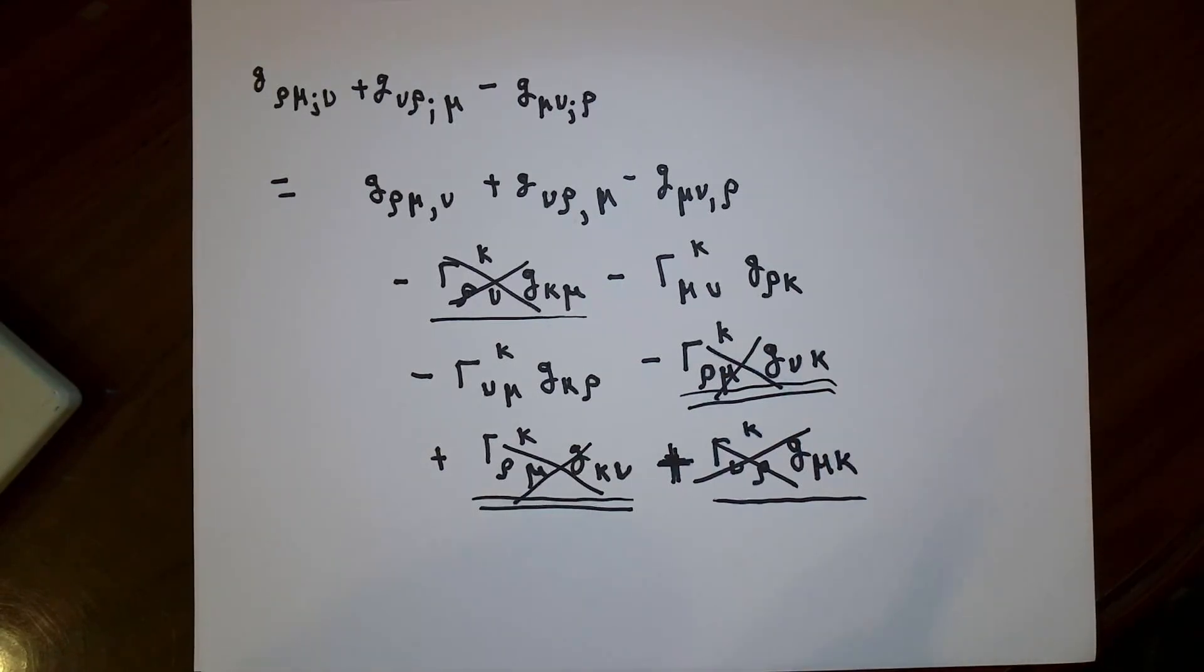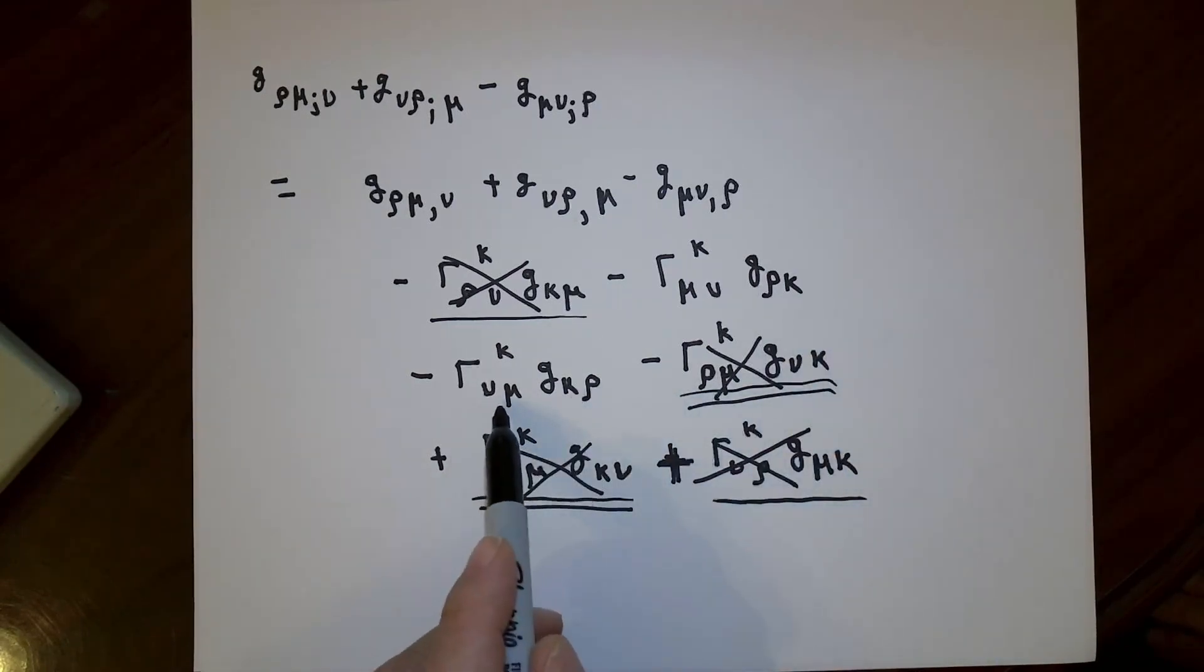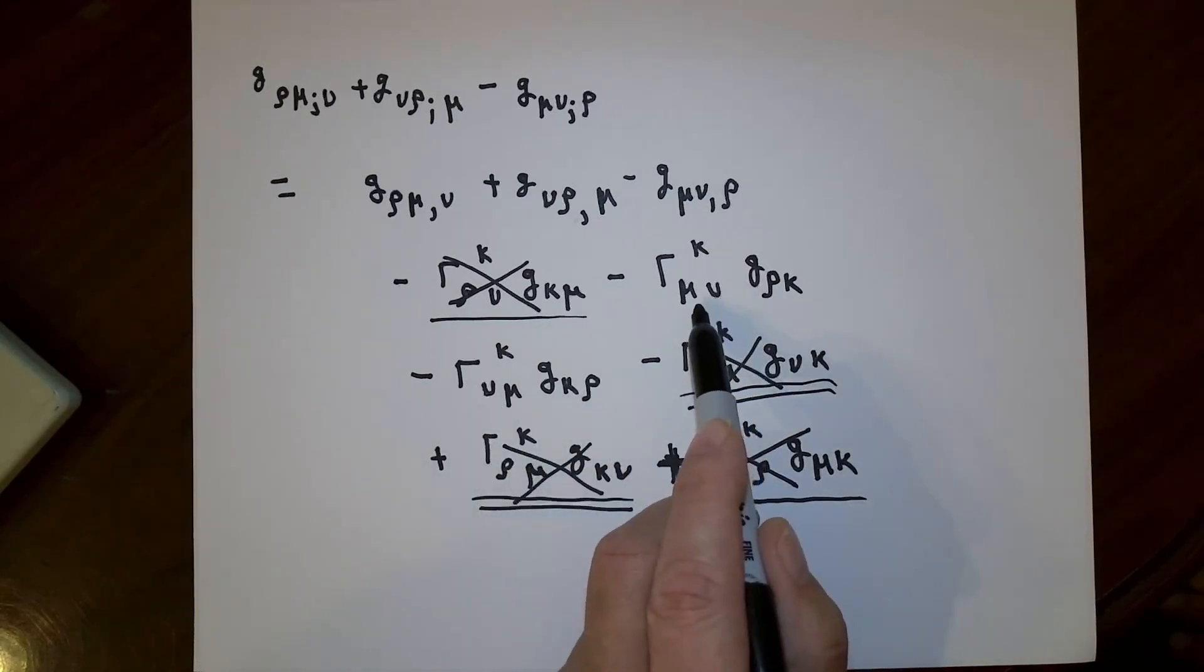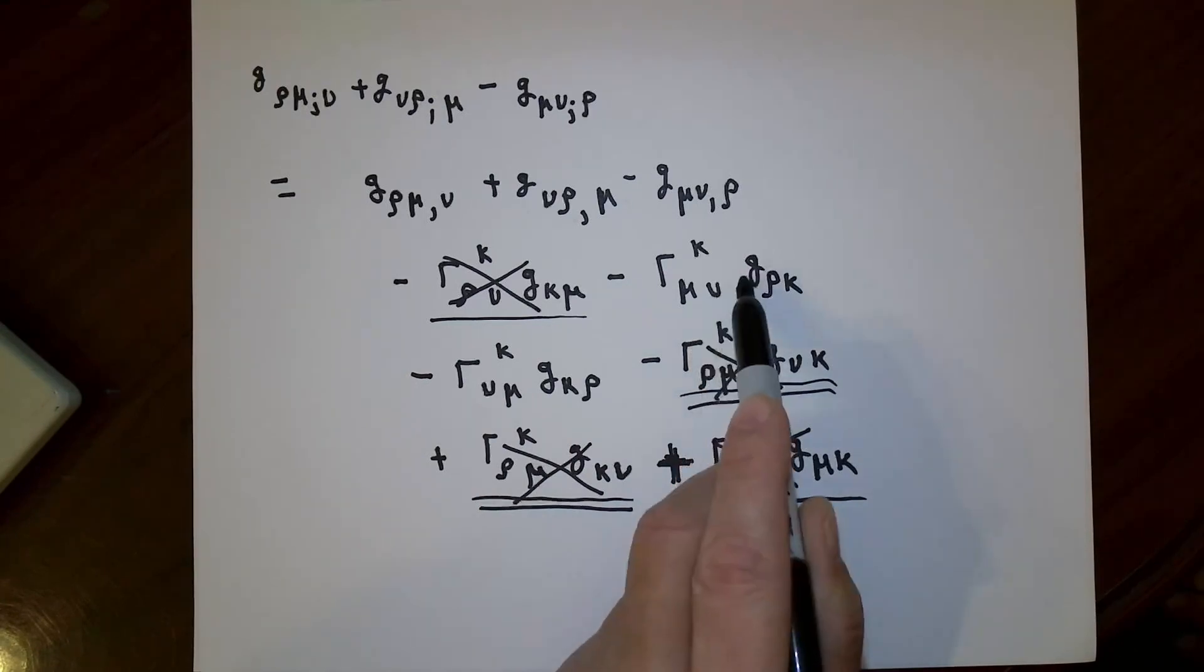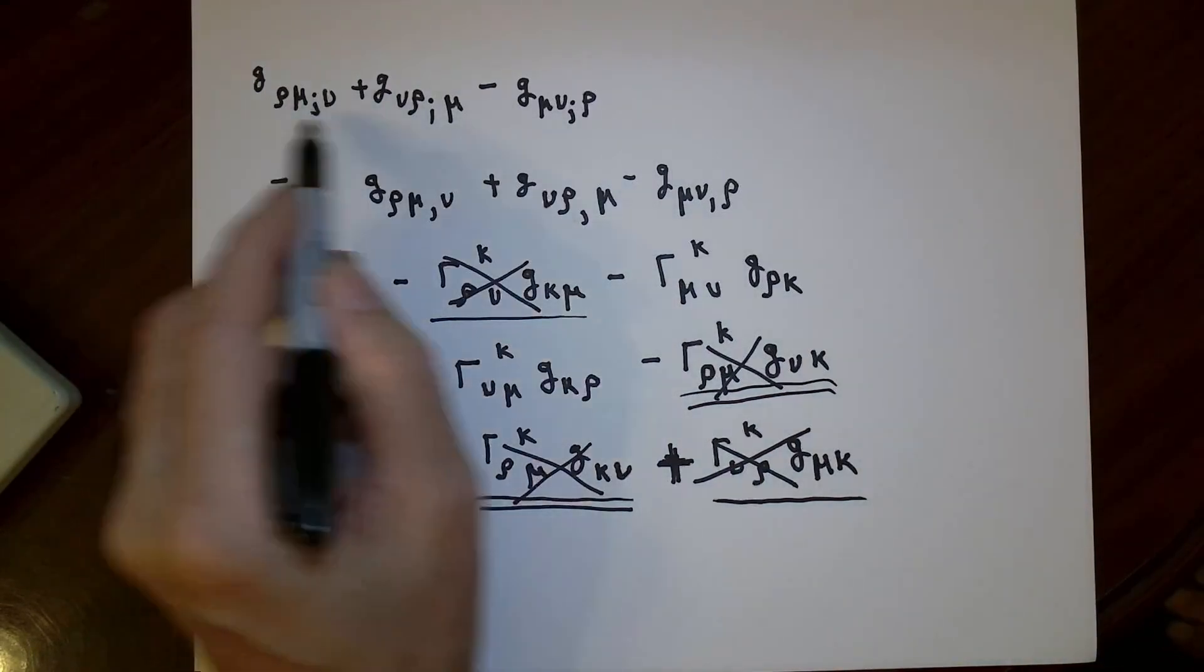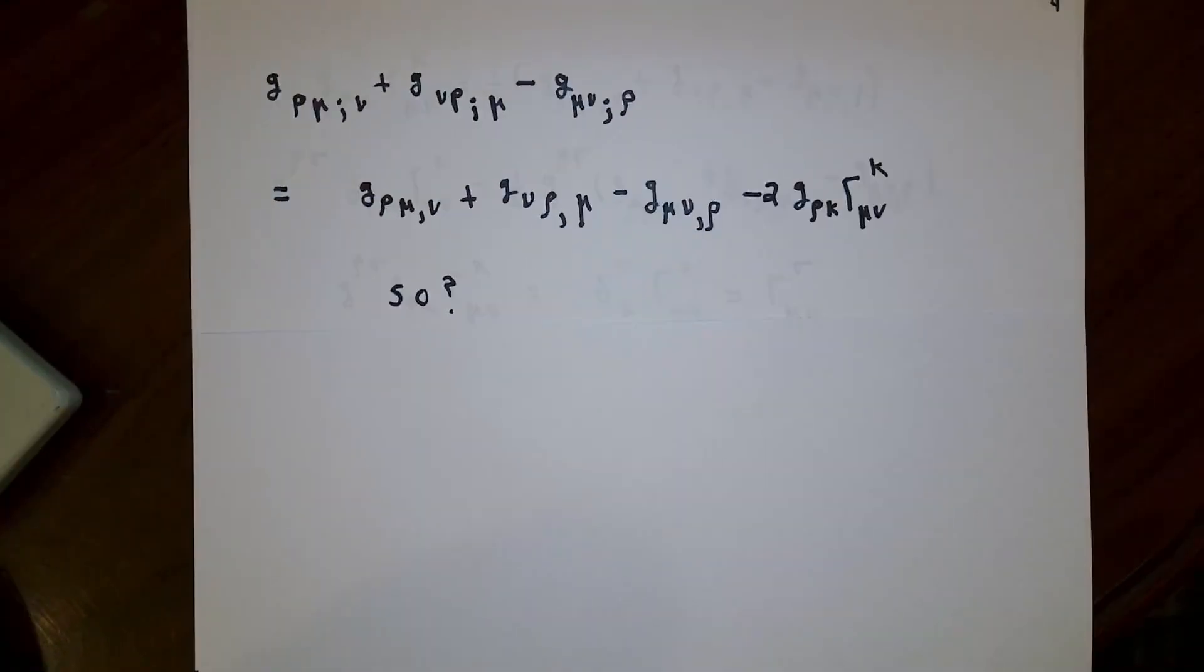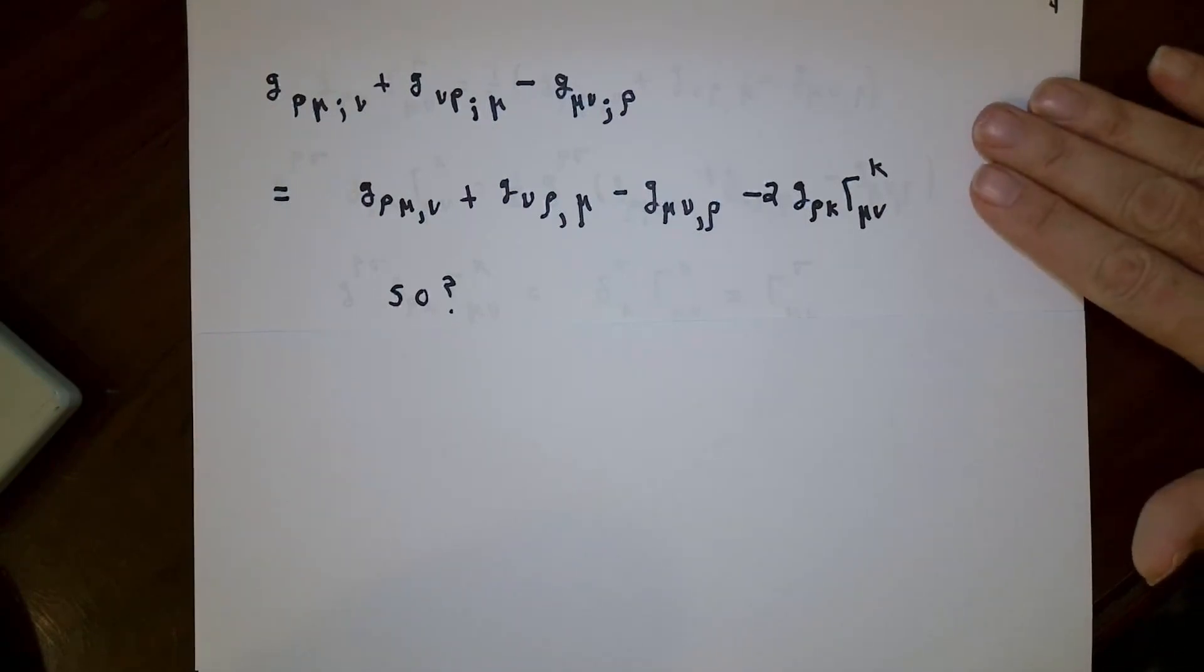So this combination of covariant derivative components equals the corresponding components when you use ordinary partial derivatives, minus that, minus that. If you look though, G_ρκ, G_κρ, Γ^κ_νμ, Γ^κ_μν. These two terms are equal to each other, and both of them are being subtracted. So they don't cancel each other out. This quantity is this quantity minus two times that quantity. So after all of this work, our result simplifies down into this.